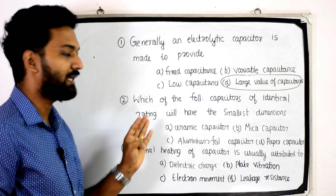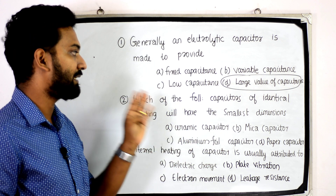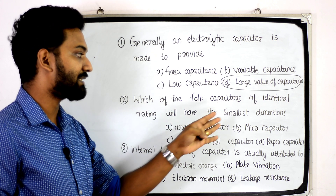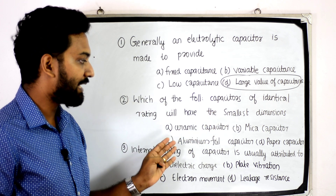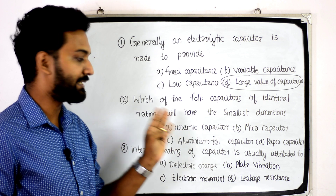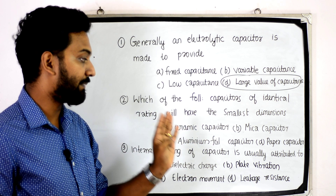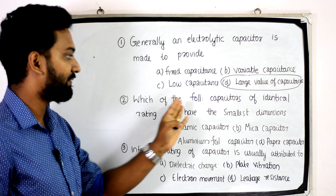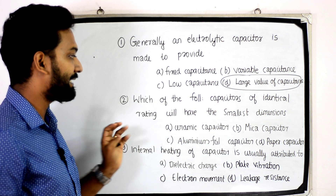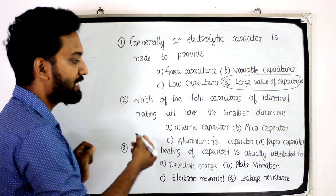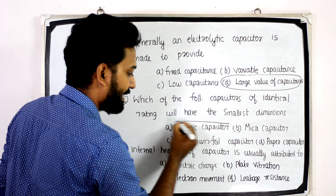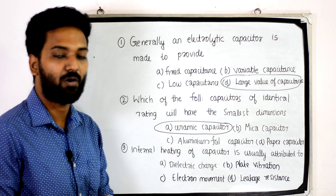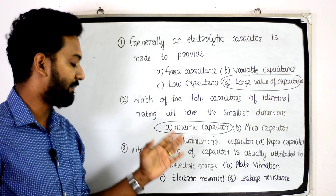Second question: Which of the following capacitors of identical rating will have the smallest dimensions? Options: ceramic capacitor, mica capacitor, aluminum foil capacitor, and paper capacitor. Which of the following capacitors of identical rating will have the smallest dimension? The answer is ceramic capacitor, option A.